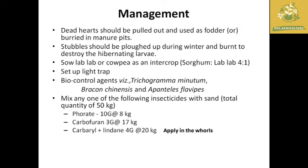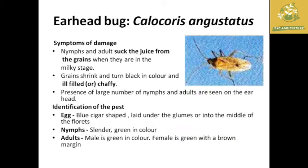Management practices for stem borer include release of biocontrol agents like Trichogramma minutum and Bracon chinensis at field level, use of light traps, and removal of dead hearts for use as fodder or burial in manure pits to destroy eggs and larvae and stop the second generation. Intercropping with lablab or cowpea at a ratio of 4:1 is also effective.